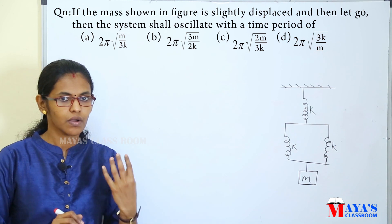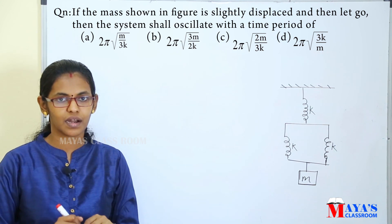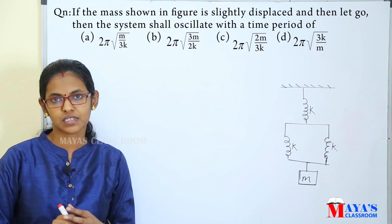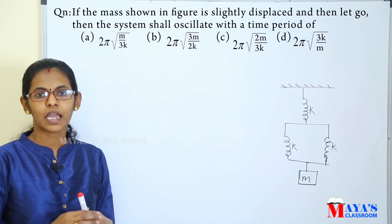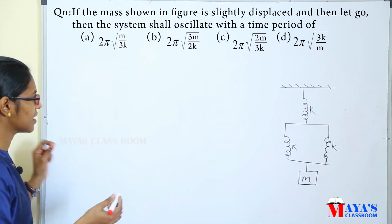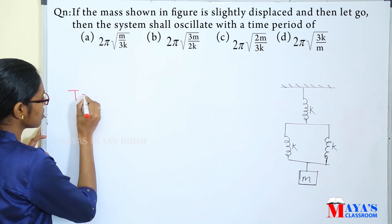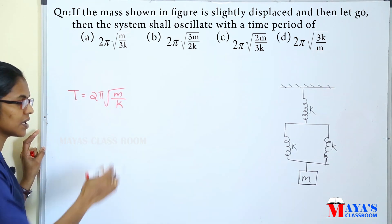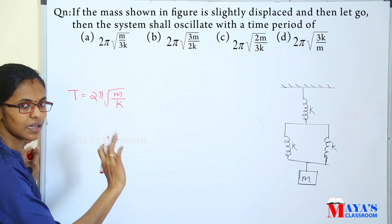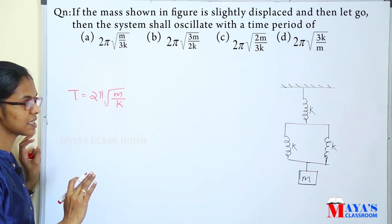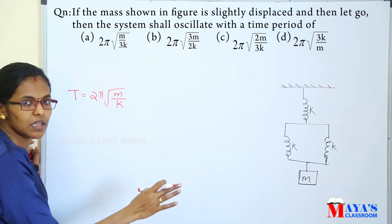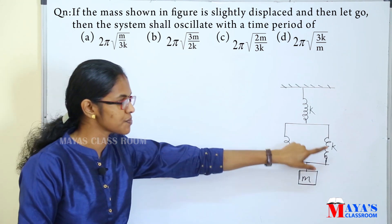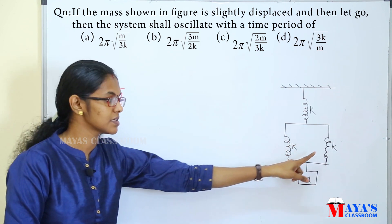What is the result? The oscillation time period. The mass is connected to the spring. There are 3 springs in total. Now the spring is called the red spring. The two springs are called series.